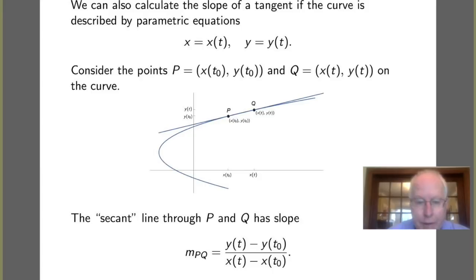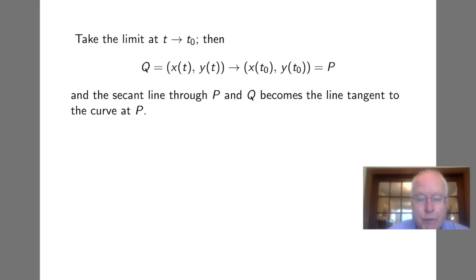The secant line has slope computed as follows: we start with the difference in the y coordinates, so the y coordinate of Q is y(t) and of P is y(t₀), then divide by the change in the x coordinates. We then take the limit as t approaches t₀, and we assume x(t) and y(t) are continuous functions. So when t approaches t₀, x(t) approaches x(t₀), y(t) approaches y(t₀); that is, point Q moves towards point P.